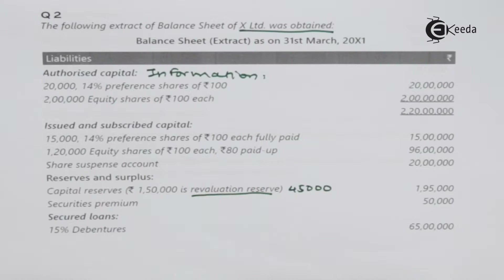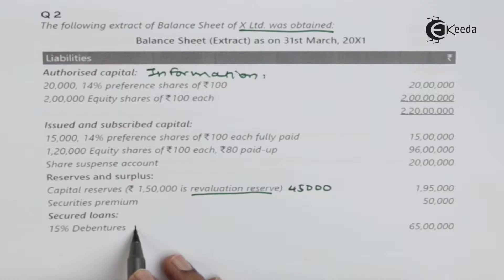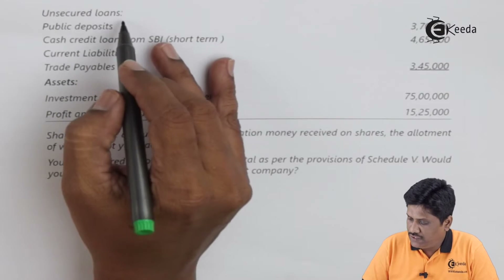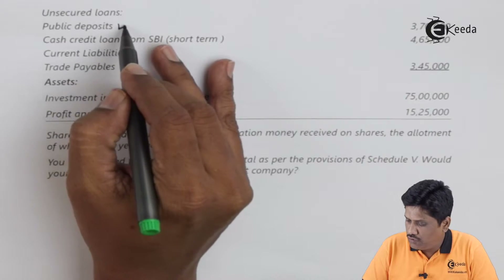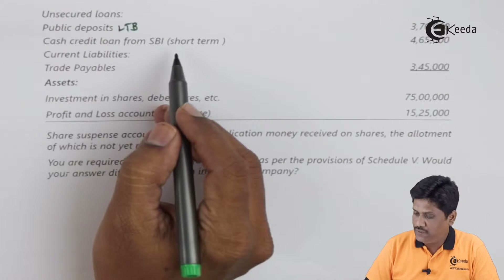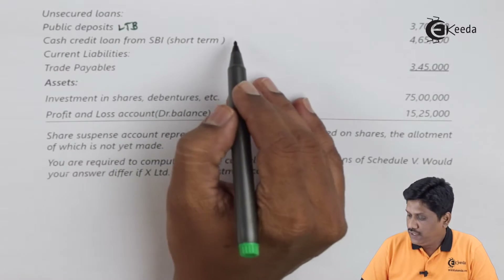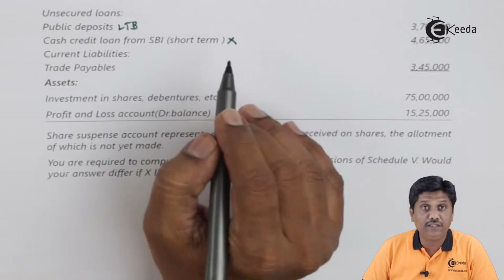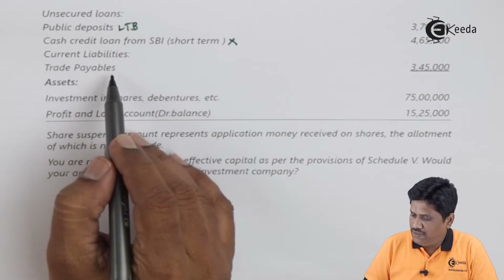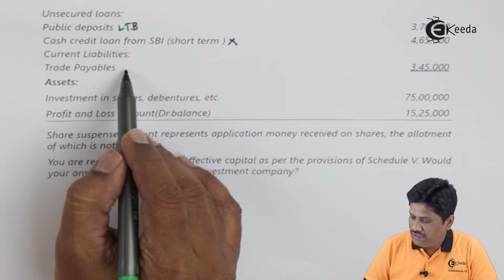Next is securities premium, which is actual profit you realize when you issue shares to the public. 15% debentures are your long-term borrowing. Unsecured loan public deposits are also long-term borrowings. Cash credit from SBI is short-term — it will not be counted. Short-term liabilities will not be counted. Current liabilities like trade payables will also not be counted.